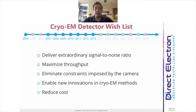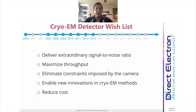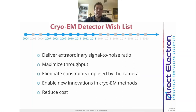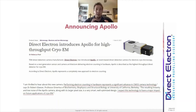It would also be nice to eliminate the constraints imposed by the camera. Electron counting using the brute force software-based approach requires turning down beam intensity, limiting maximum usable exposure rate. It would be ideal if the detector delivered high quality images regardless of beam intensity. Additionally, the camera should enable new innovations in cryo-EM methods — current cameras are tailored specifically for one workflow. And finally, everybody always asks: how much does it cost? A lower cost camera is always desirable.